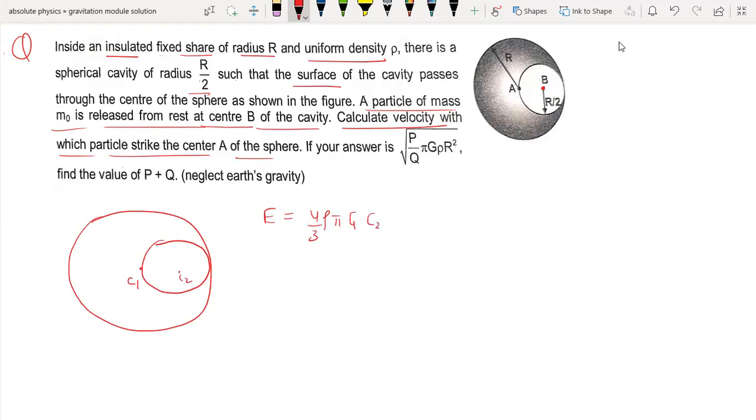The direction of this field is center to center. At any point, the field value is 4 by 3 pi rho G times the distance.